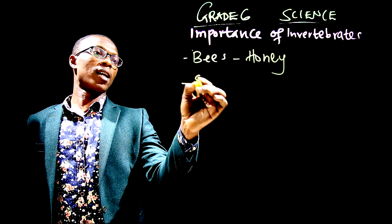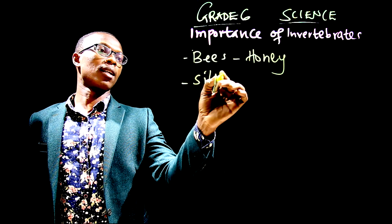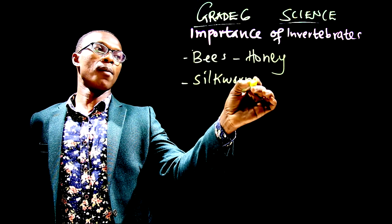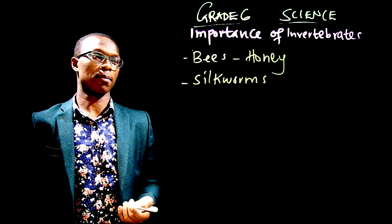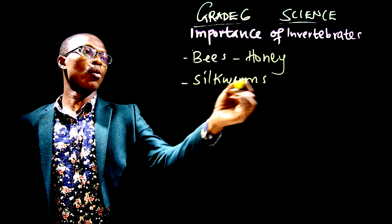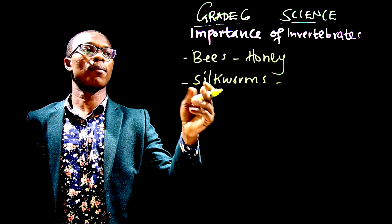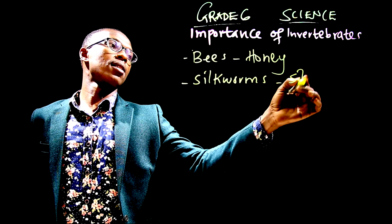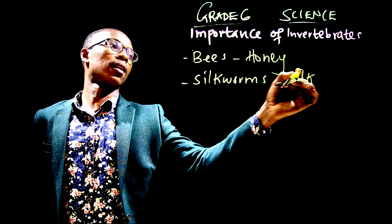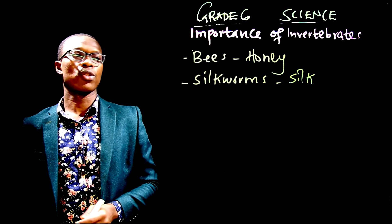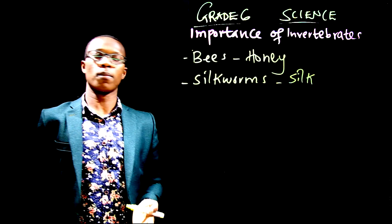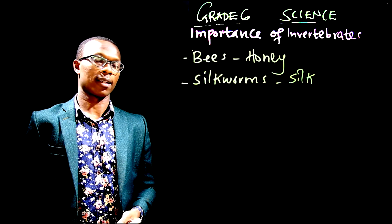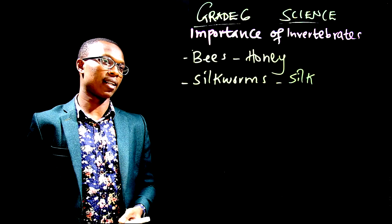Another one, we also have the silkworm. Worms are also invertebrates. Now, what do we get from silkworms? We get silk. So, silkworms normally provide us with silk. I hope that's clear.